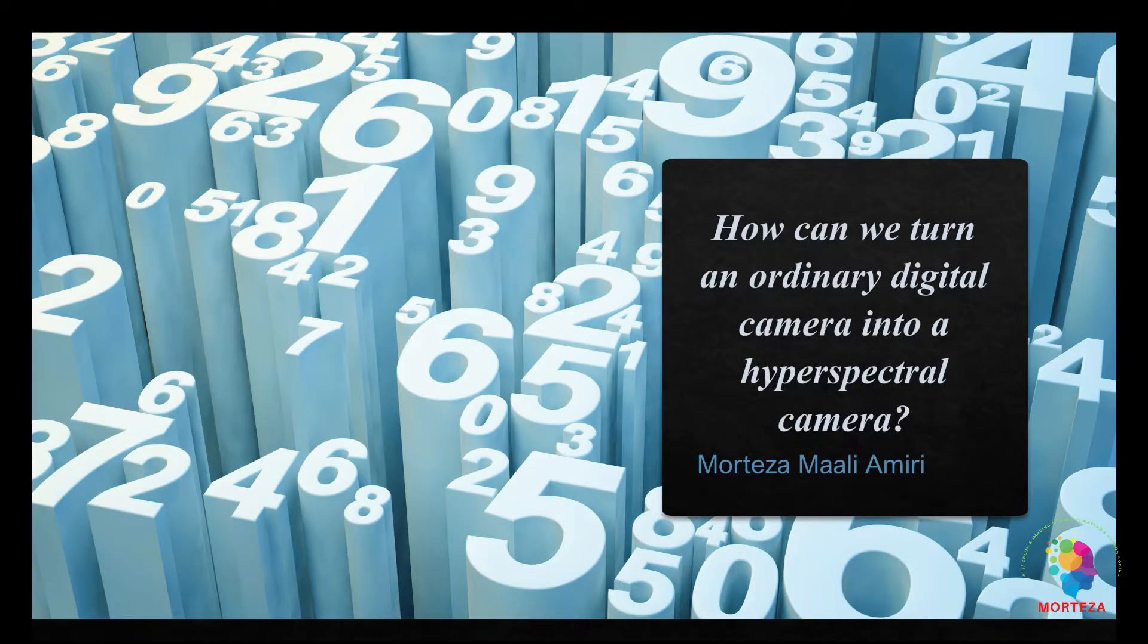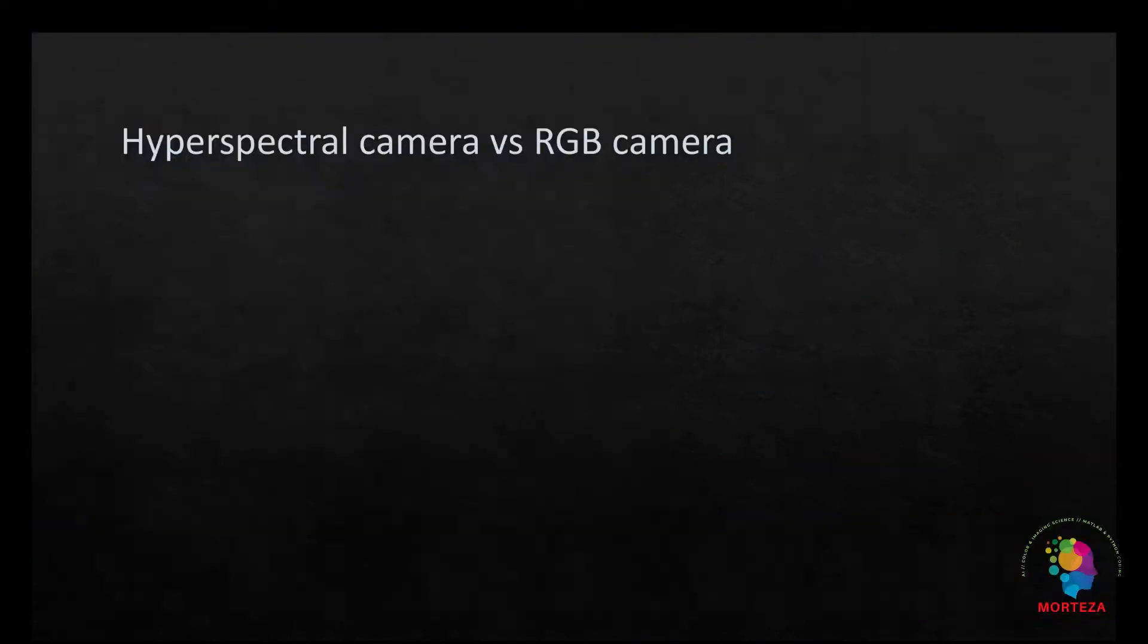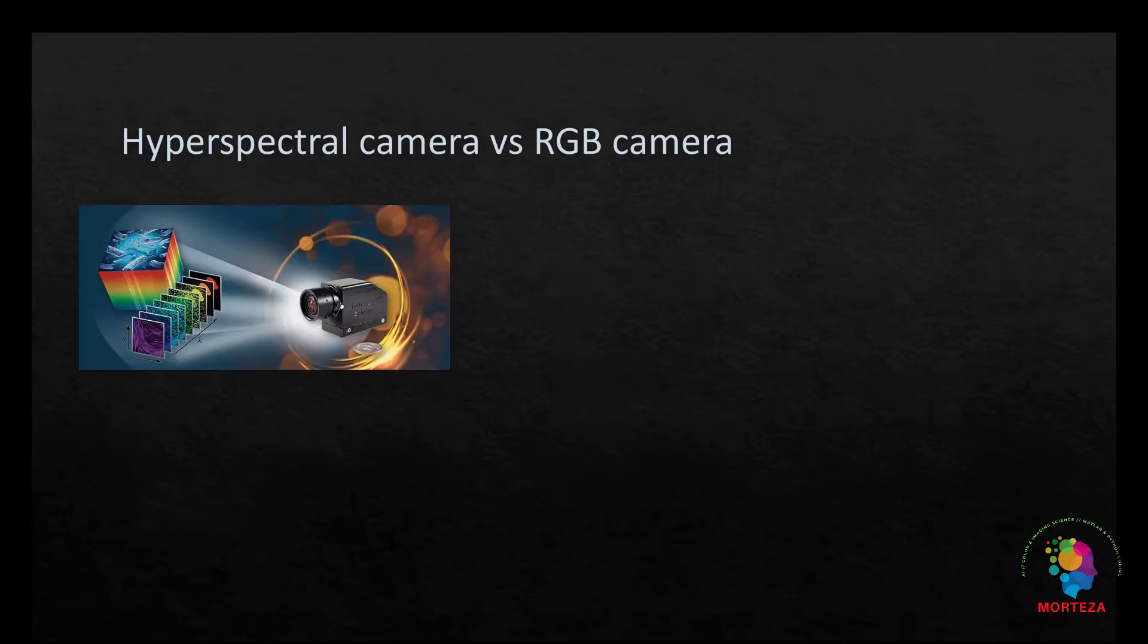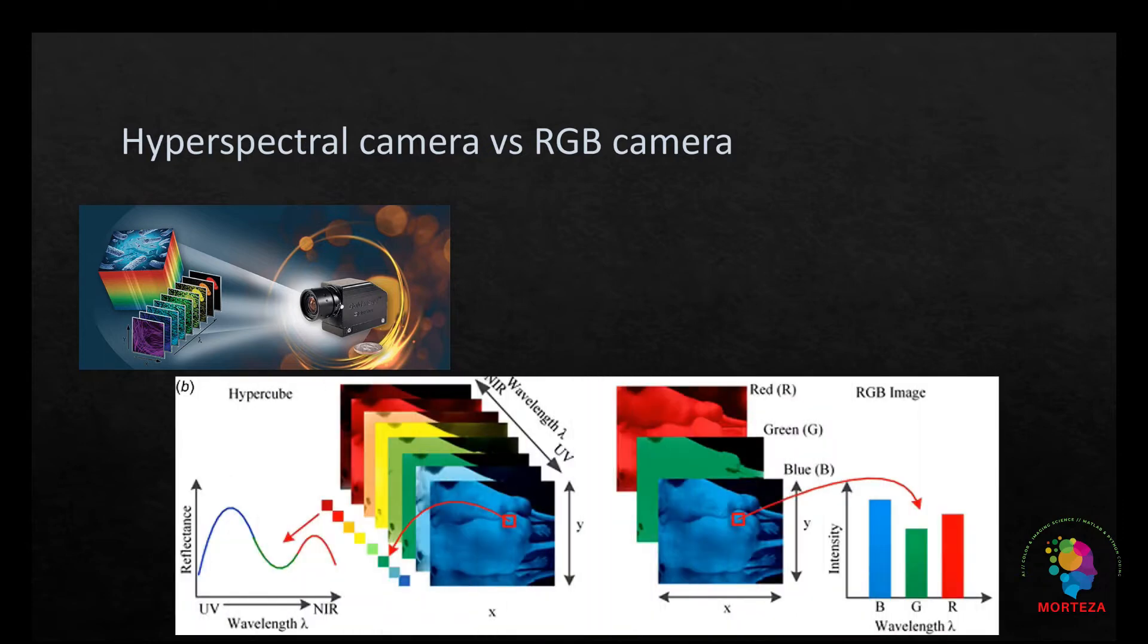As I said in this video, I want to talk about how we can turn an ordinary digital camera into a hyperspectral camera. Hyperspectral cameras are capable of capturing the spectral reflectance of objects in a way that the camera captures an image, but the image contains the spectral reflectance information for each pixel or point in the image.